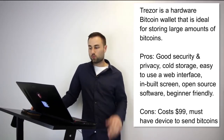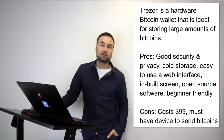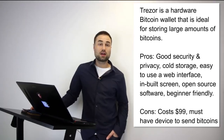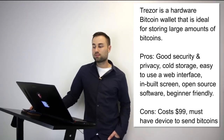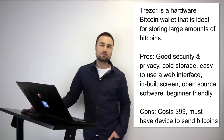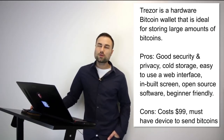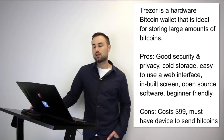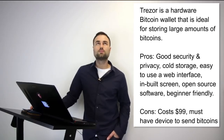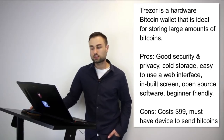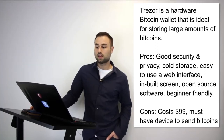Now let's talk about two hard wallets. Number one is Trezor — a hardware Bitcoin wallet ideal for storing large amounts of Bitcoin. Trezor cannot be affected by malware and never exposes your private keys, which makes it very safe. The pros: really good security and privacy, cold storage, easy-to-use web interface, built-in screen, open source software, beginner-friendly, and cost around $100. The downside is you must have the device to send Bitcoin.